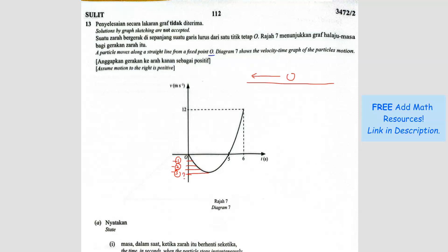We don't know exactly what that highest velocity is, but after reaching it, the particle slows down. It's still negative — still moving to the left — but the speed is decreasing, until it reaches 5 seconds where the velocity is 0. So at the 5th second, the particle stops because there is no more velocity.